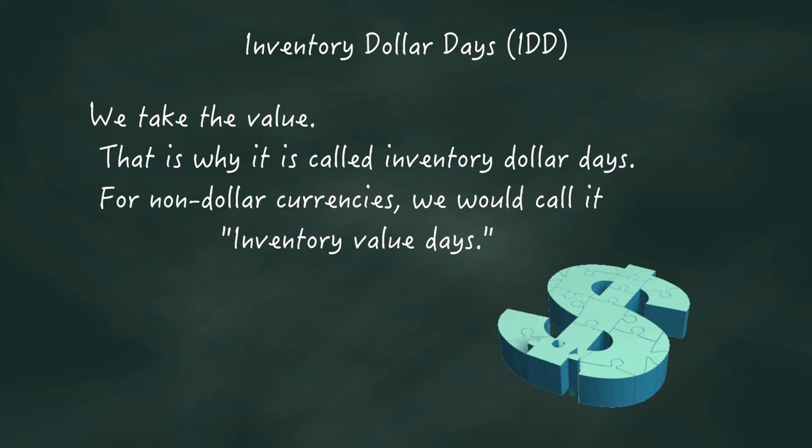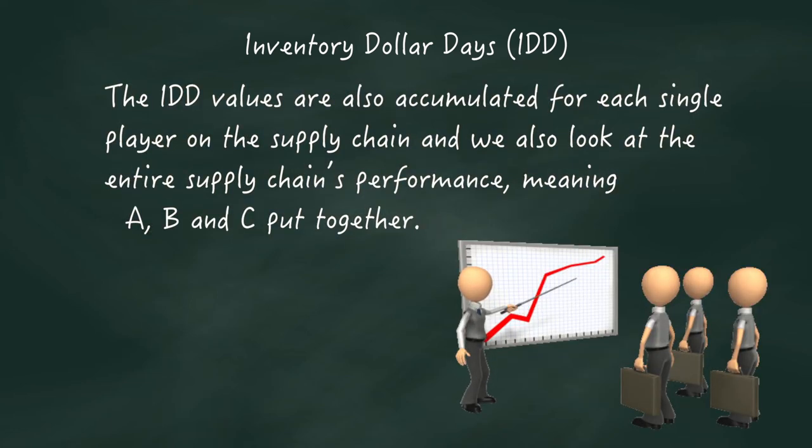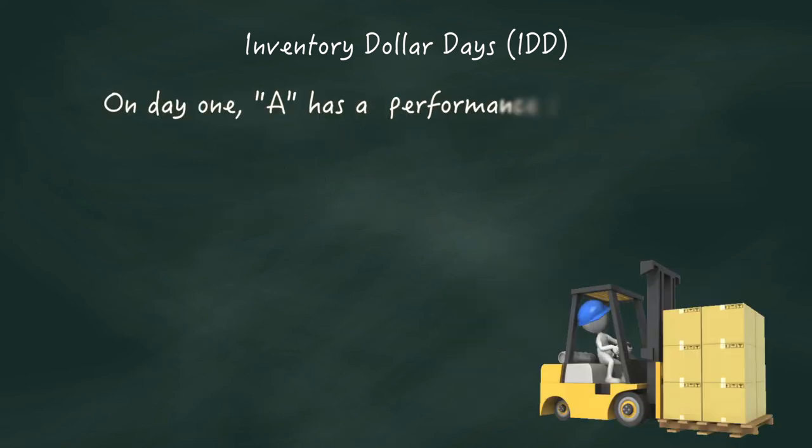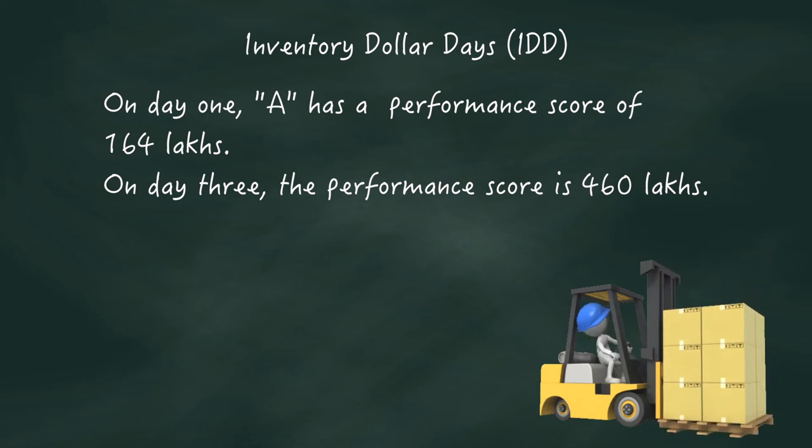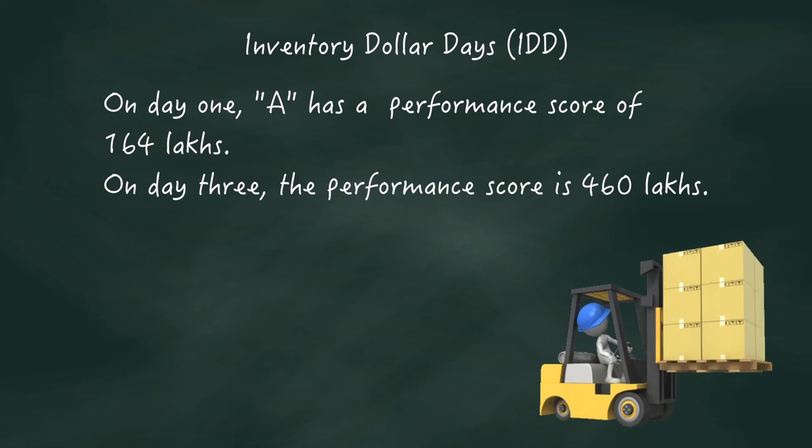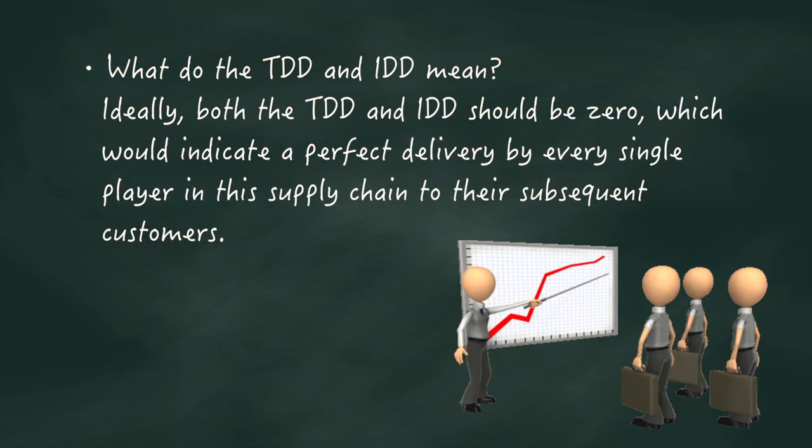Original accounting would take only the number of days. Here we take the value. That's why it's called inventory dollar days. For non-dollar currencies, we would call it inventory value days. Just like in TDD, the IDD values are also accumulated for each single player on the supply chain. And we also look at the entire supply chain's performance, meaning A, B and C put together. For example, on day one, A has a performance score of 164 lakhs. On day three, the performance score is 460 lakhs. What do the TDD and IDD mean? Ideally, both the TDD and IDD should be zero, which would indicate a perfect delivery by every single player in the supply chain to their subsequent customers.